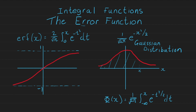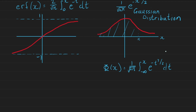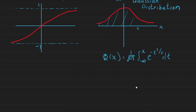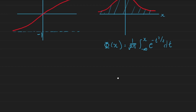We want to find the area of this integral, letting x go to infinity. We expect that integrating the full Gaussian to infinity should give us one, since the maximum probability is one — there can't be any probability greater than 100%. Let's verify that this actually happens.